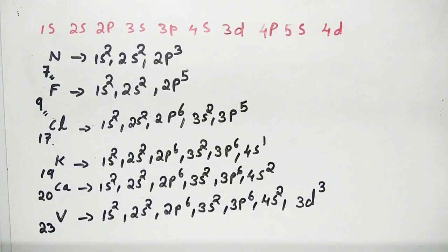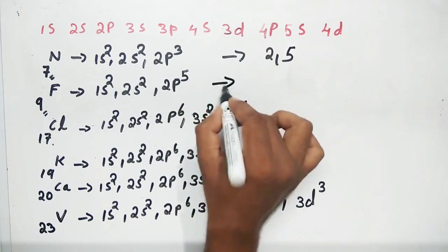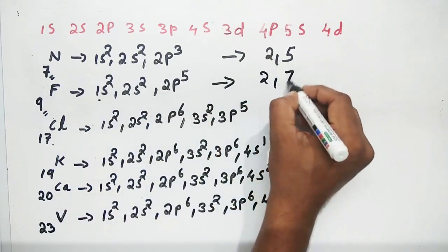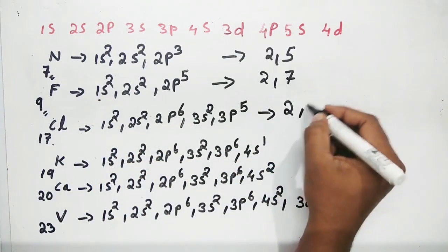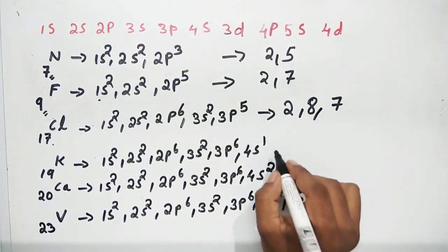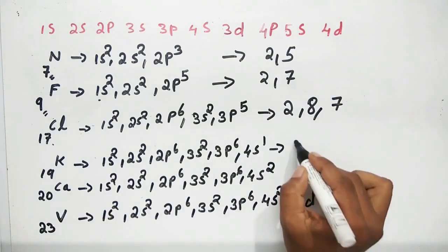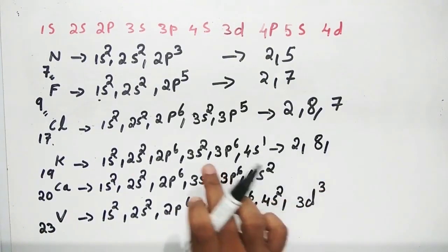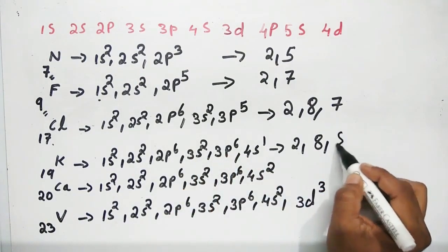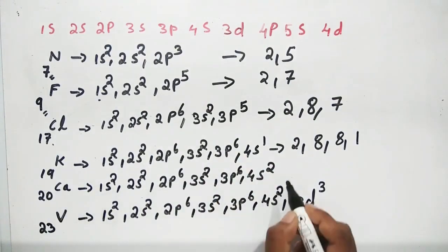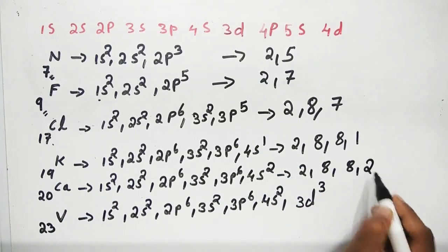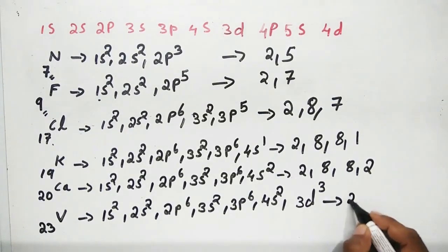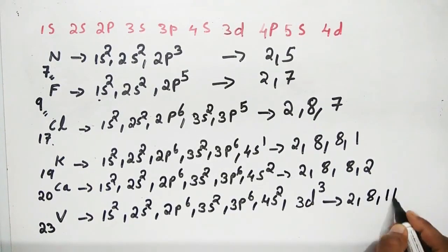Now let's look at shell electronic configurations. Nitrogen is 2, 5. Fluorine is 2, 7. Chlorine with atomic number 17 is 2, 8, 7. Potassium with atomic number 19 is 2, 8, 8, 1. Calcium with atomic number 20 is 2, 8, 8, 2.